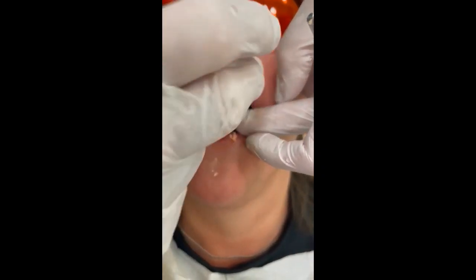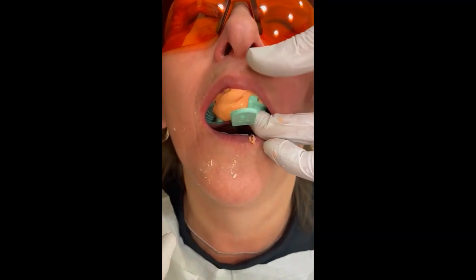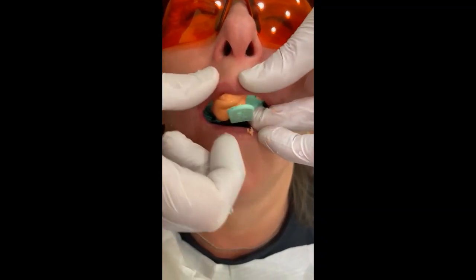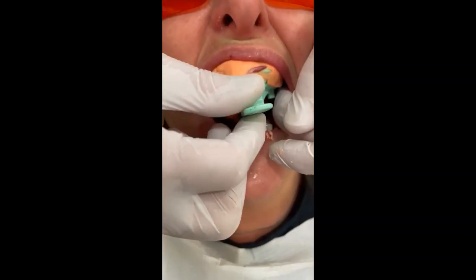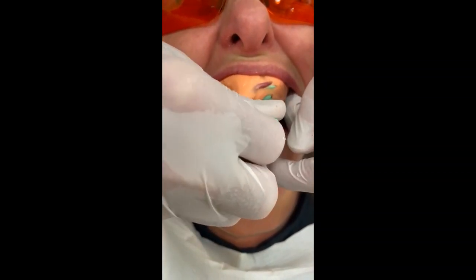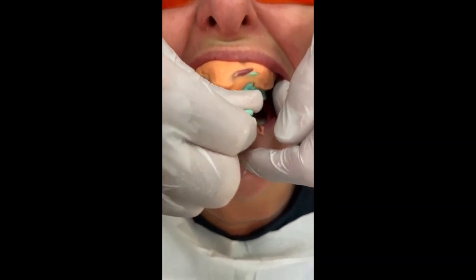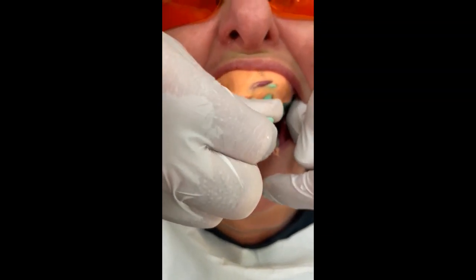Border mold. The patient moves their chin left and right, then we wait for it to set. Now it's set, just gently release it. Finger down the buccal sulcus, release the back first to break the seal, like so, take it out.